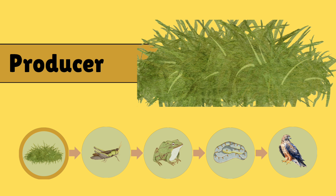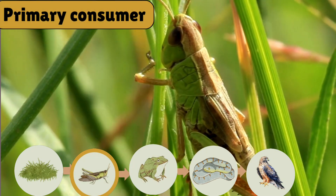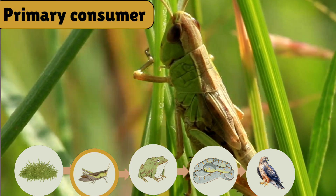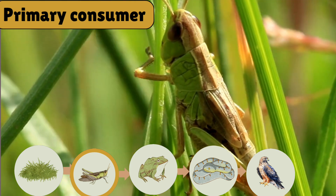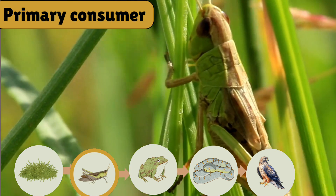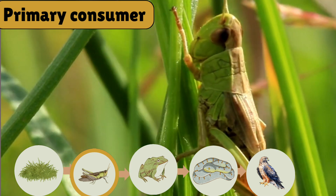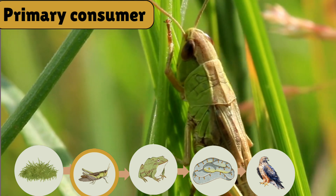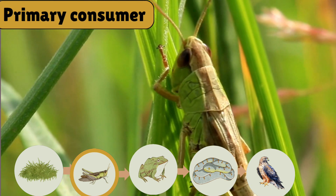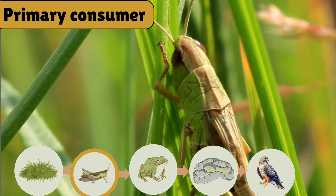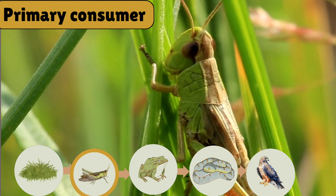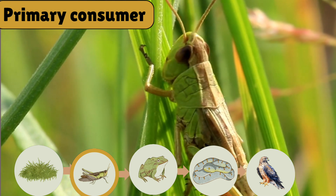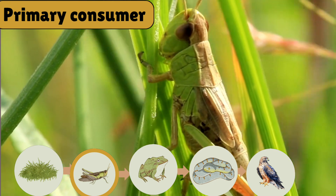Next, coming to the primary consumer. In the second trophic level, the primary consumer eats the producer — in this food chain, the primary consumer eats the producer, which means grass.